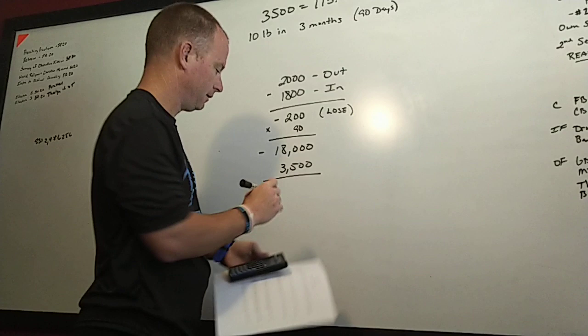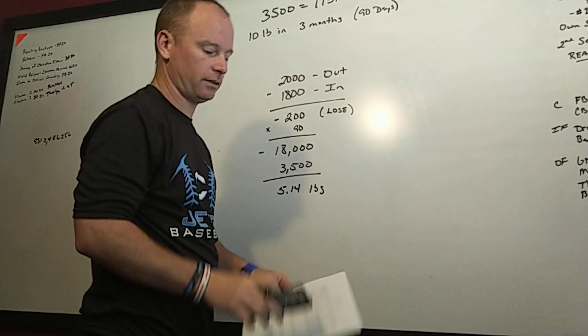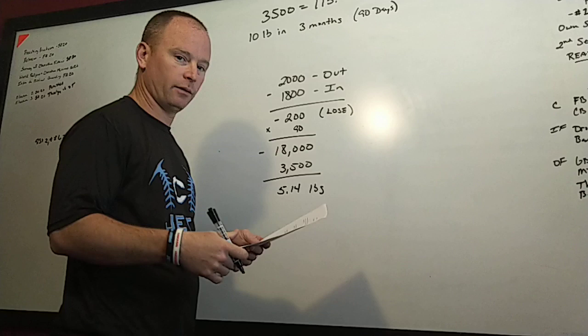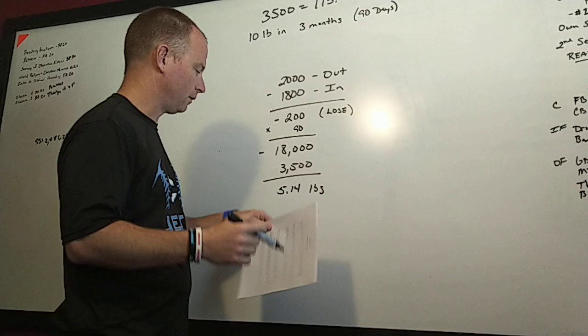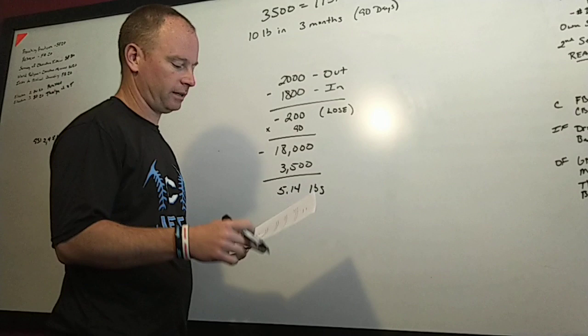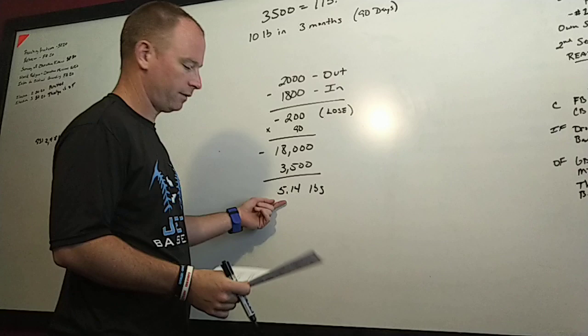We're going to bring that 3,500 down here and we know that's one pound. How many times does 3,500 go into 18,000? That's going to give us our answer. 3,500 into 18,000 is 5.14 pounds. That tells us that over the course of 90 days Tom has lost 5.14 pounds. Did Tom meet his goal? His goal was 10 pounds, he lost 5.14 pounds, so no he didn't meet his goal.